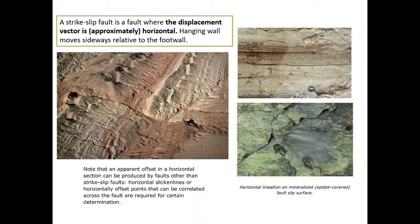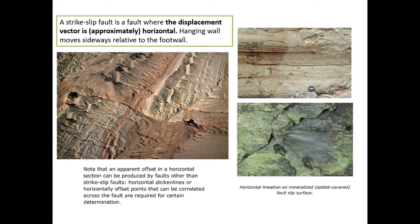For strike-slip faults, slickenlines will be horizontal or parallel to the surface of the Earth. Here we have two examples: on the right-hand side you can see the surface of a strike-slip fault — all the scratch marks on the surface are slickenlines, which are scratch marks left by the other moving fault block. They are horizontal. We also have an epidote-covered surface where all these horizontal linear marks are slickenlines, and they are horizontal or sub-horizontal.